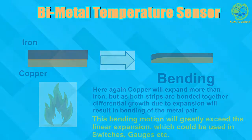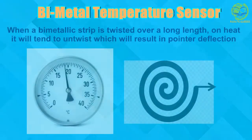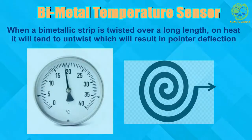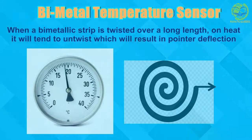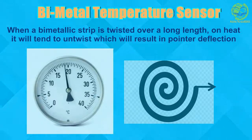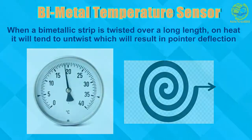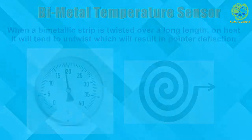The bimetal temperature sensor results in a bending motion with change in temperature. To use it in a temperature gauge, a bimetal strip is twisted over a long length and a pointer is attached at the outer end. With an increase in temperature, the twisted bimetal strip will try to untwist itself. During this untwisting mechanism, the pointer will deflect, and that is how a bimetal strip can be used to design a temperature gauge.